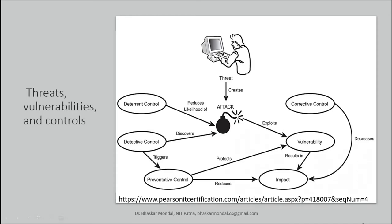Here you can see threats, vulnerabilities, and controls and the relation among them with a diagram. This person is an attacker — the threat for the network. He creates attacks, and an attack exploits the vulnerability; that is the relation we understand from our previous discussion. Vulnerability results in some impact.